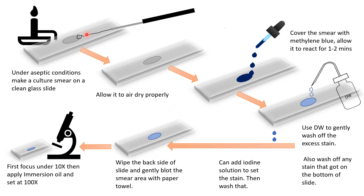For the procedure: under aseptic conditions — always remember, even when making a small smear you must work under aseptic conditions — flame and incinerate your wire loop, then allow your smear to air dry properly. After the smear is air dried, cover it with methylene blue, for example, which is one of the dyes used for monochrome staining, and allow it to react for one to two minutes.